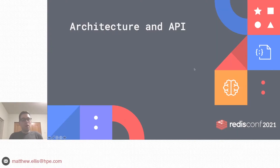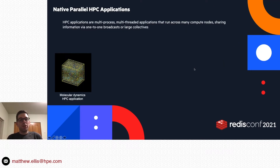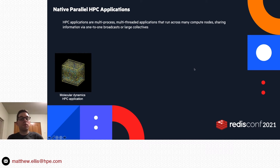Thanks Sam. I'm going to talk a little bit about the architecture and API of SmartSim. Before we dive in, I want to give some background on what we mean by a native parallel high performance computing application. HPC applications are normally multi-process, multi-threaded applications that run across many compute nodes, sharing information via one-to-one communication or large broadcast collectives. As a concrete example, consider a molecular dynamics simulation — a model like this usually has too many degrees of freedom to fit on a single processor or even a single compute node.